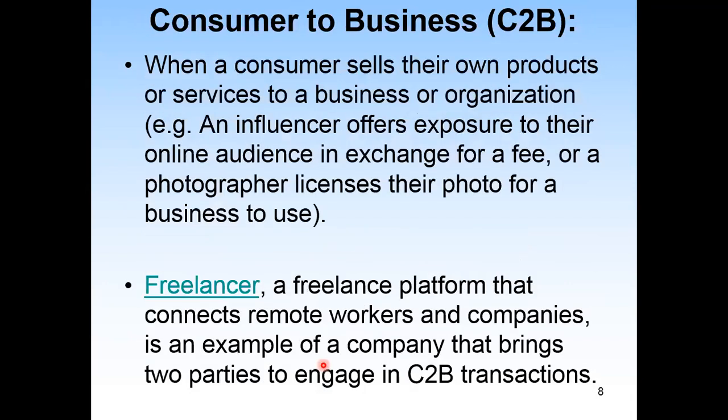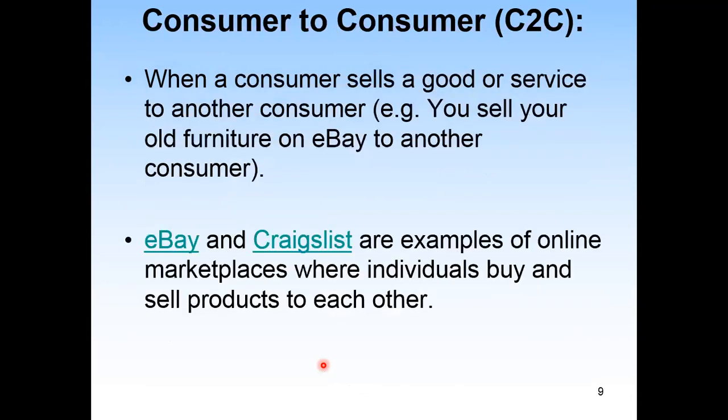Consumer to Business (C2B): when a consumer sells their own products or services to a business or organization. For example, an influencer offers exposure to their online audience in exchange for a fee, or a photographer licenses their photo for a business to use. Freelancer platforms that connect remote workers with companies are examples that facilitate C2B transactions. Consumer to Consumer (C2C): a consumer sells a good or service to another consumer, such as selling old furniture on eBay. eBay and Craigslist are examples of online marketplaces where individuals buy and sell products to each other.